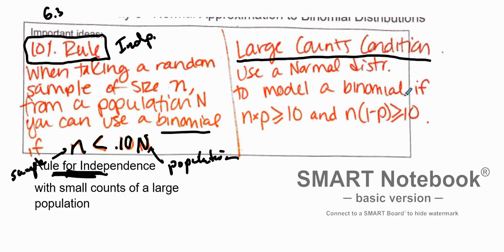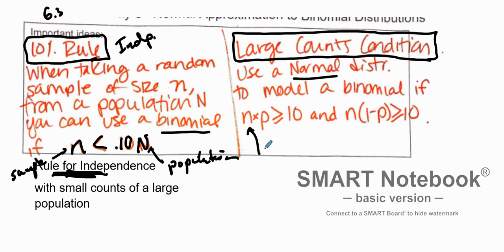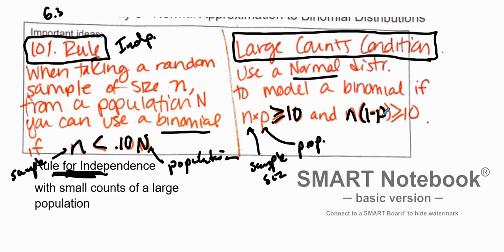Now with a binomial setting, how do you know if a binomial distribution will be normal? That comes down to the large counts condition. If your n value multiplied by your proportion p is greater than or equal to 10, and also n times the complement (1 minus p) is also greater than or equal to 10, then that binomial distribution will be approximately normal. So you can use a normal distribution to model a binomial setting — this is the large counts condition.